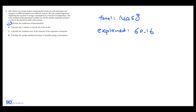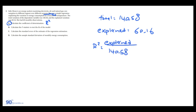The total variation of the dependent variable was 140.58, and the explained variation from the model is 60.16. In part A, we're asked to calculate the coefficient of determination, also known as R-squared. The R-squared is a quick metric describing how good your model is at explaining the relationship among the variables — how well temperature explains energy consumption. R-squared equals explained variation divided by total variation: 60.16 / 140.58 ≈ 0.42.